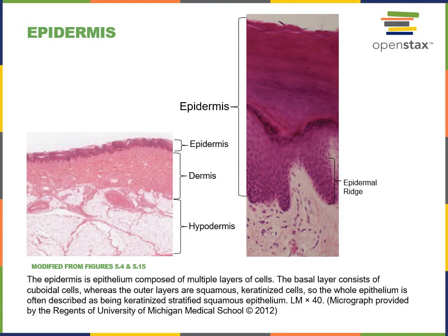There are ridges in the deep layers of the epidermis. These epidermal ridges provide an increased surface area for contact between the epidermis and the dermis. The most superficial layer of the dermis projects up adjacent to the epidermal ridges in structures known as dermal papillae — papilla for singular, papillae for plural.